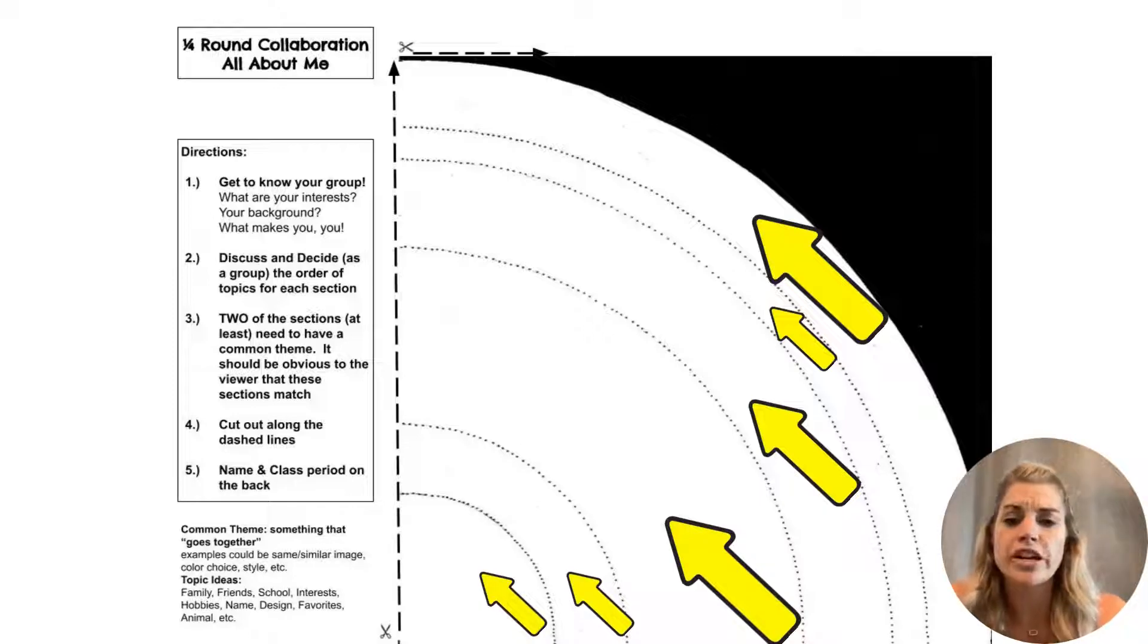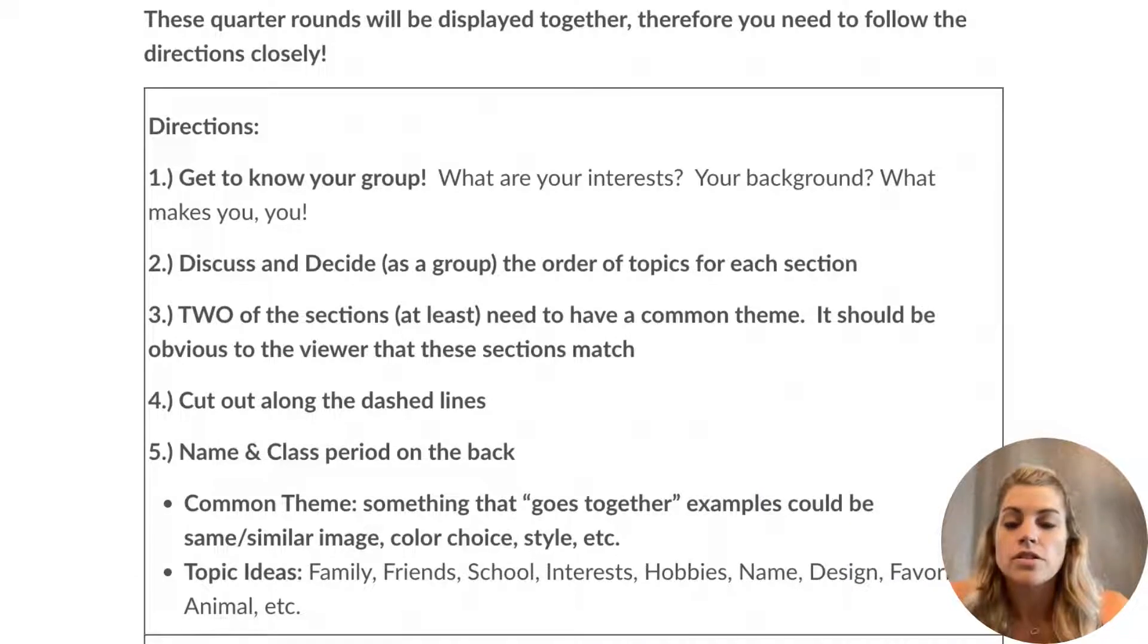When you're all done with that, you are going to cut that square out. There's a dotted line where you can cut. And you are going to also put your name and class period on the back. Something to note about this project is that these are going to be displayed together with your groups. So you really need to follow the directions closely. You don't want yours to look like it doesn't belong. You will be turning these in individually, but you will take a picture of it next to one another. So you really need to make sure that you are working together so that it all flows seamlessly.